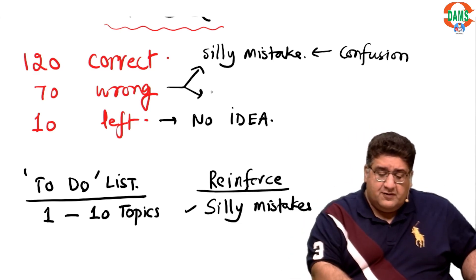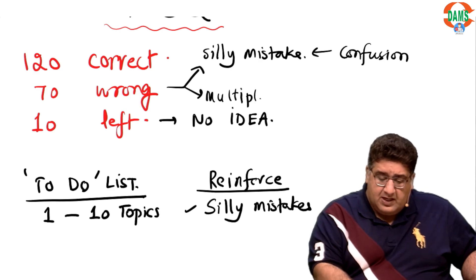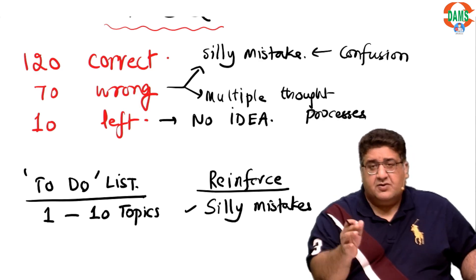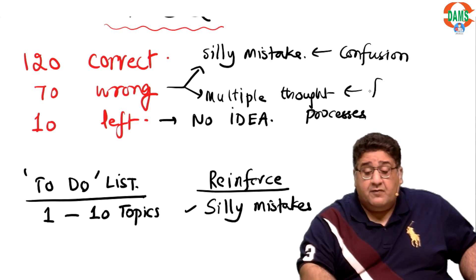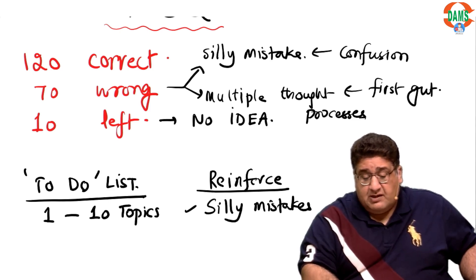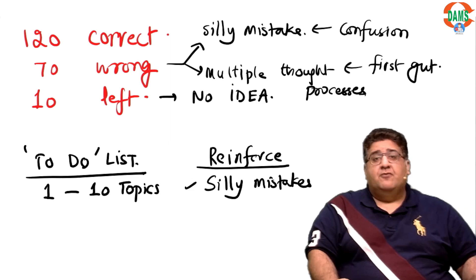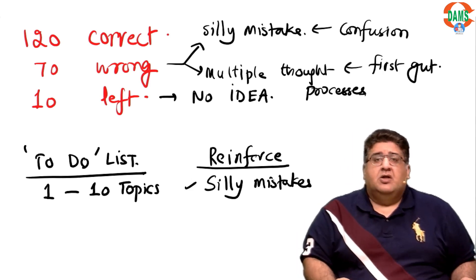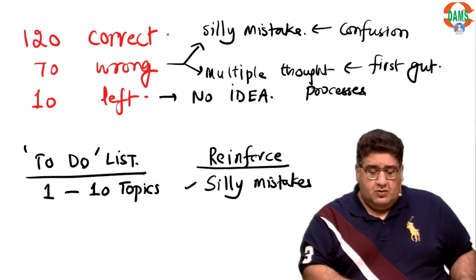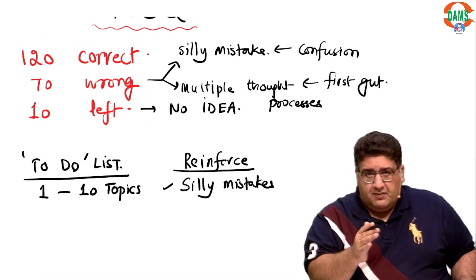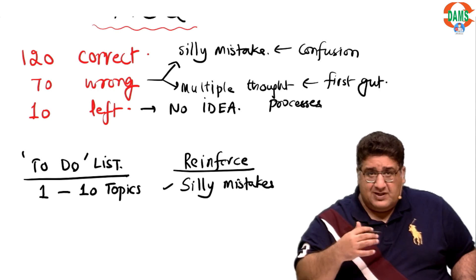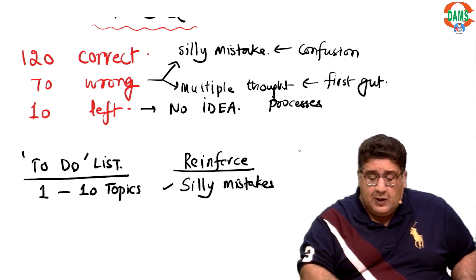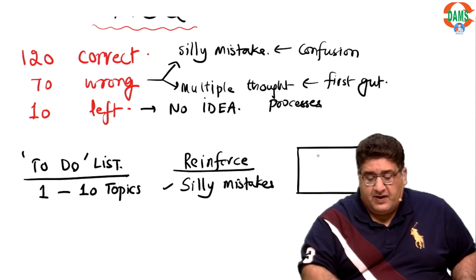So when you will revisit the question again and again, there will be multiple thought processes. Because of these multiple thought processes, you got that question wrong. So how do we solve this problem? You solve this problem by following the first gut. The first voice that comes from your gut is usually the correct voice. So if you will stop visiting that voice again and again, you will not be confused.